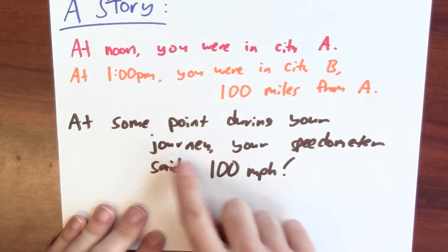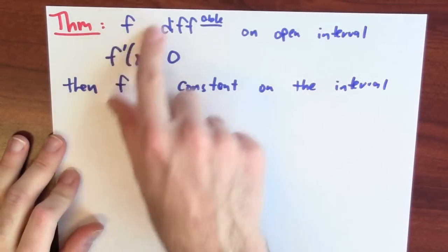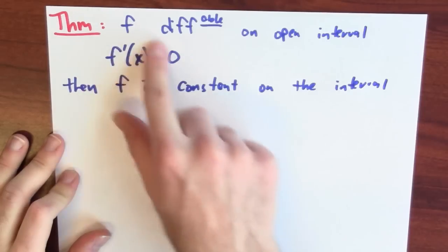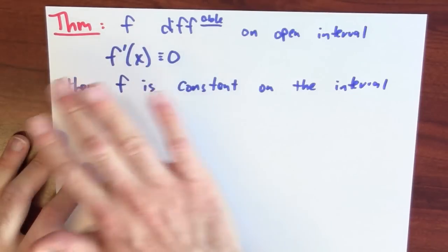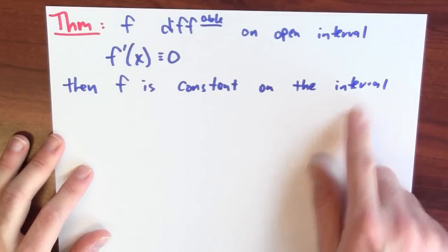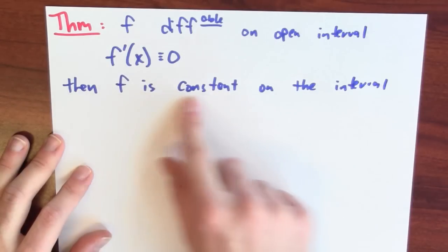So at some point along your journey, you must have exceeded the speed limit. The mean value theorem is really great — but what is it used for? How does it actually help us understand anything about a function once we know something about its derivative? Here's one very important application — it's a theorem: if f is differentiable on some open interval and the derivative is identically zero on that interval, then the function is constant on that interval. This is a really exciting result because it relates information about the derivative back to information about the value of the function.